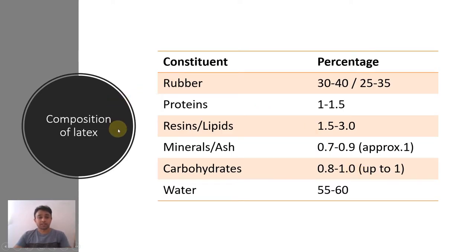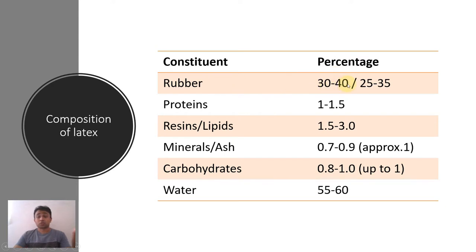The constituents in latex include rubber, water, proteins, resins, lipids, minerals or ash, and carbohydrates. These are the main components in natural rubber latex. In terms of percentage by weight, rubber content is around 25 to 35 percent according to various references.